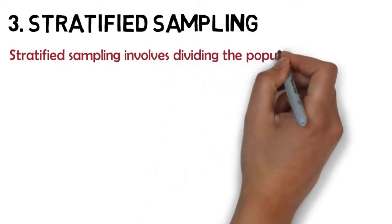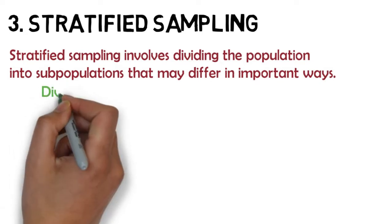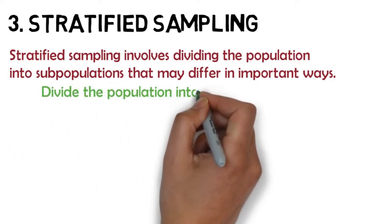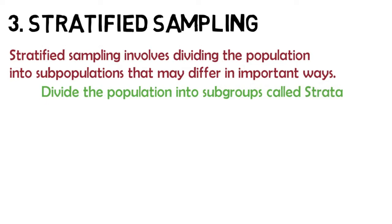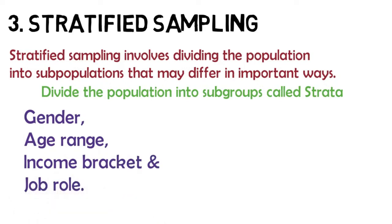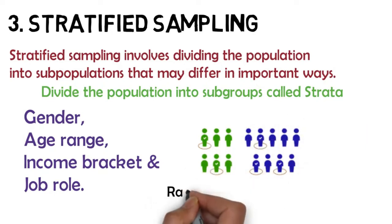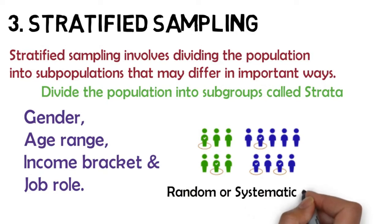Number three, we have stratified sampling. Stratified sampling involves dividing the population into subpopulations that may differ in important ways. It allows you to draw more precise conclusions by ensuring that every subgroup is properly represented in the sample. You divide the population into subgroups called strata based on relevant characteristics, for example gender, age range, income bracket, or job role. Based on the overall proportion of the population, you calculate how many people should be sampled from each subgroup, then use random or systematic sampling to select a sample from each subgroup.